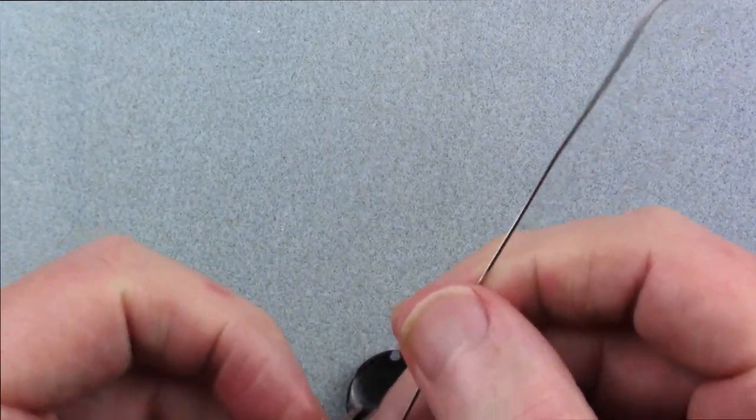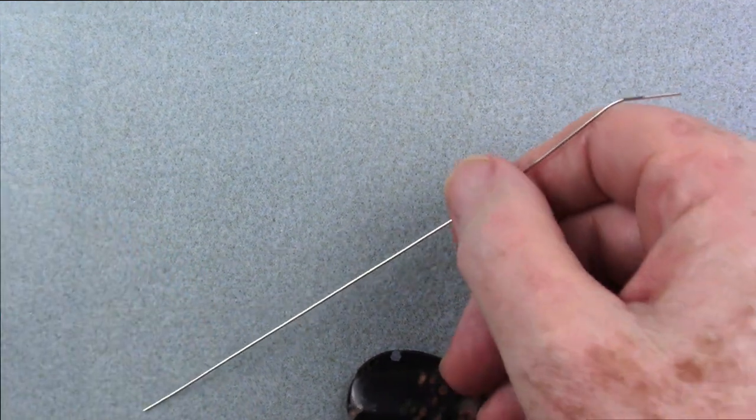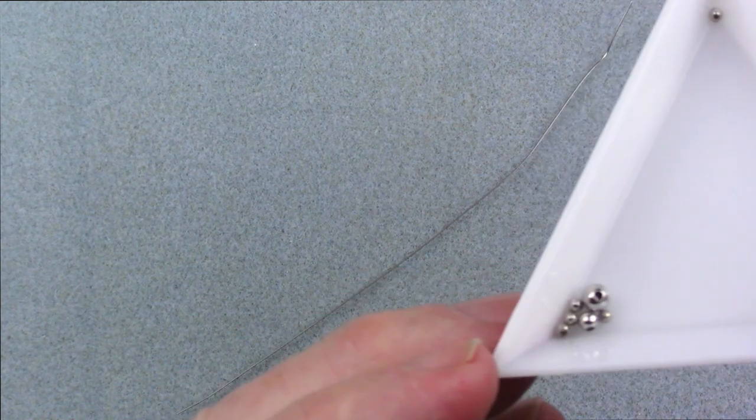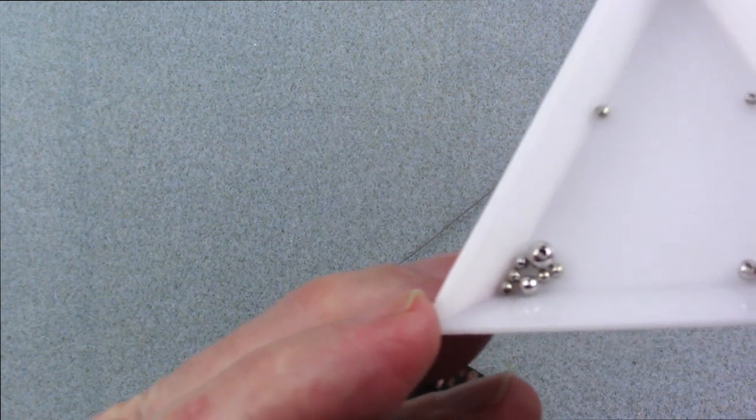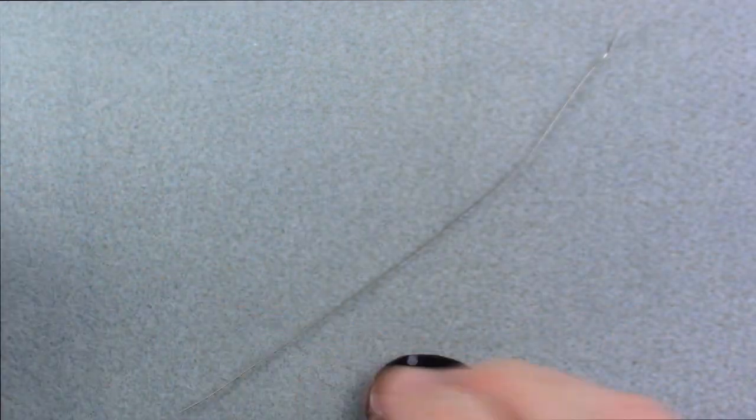You're also going to need a 6 inch length of 20 gauge half round wire, and we're going to use it to decorate the bead. But that's up to you, whatever you want to do.